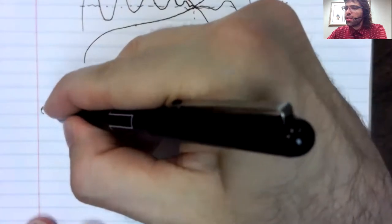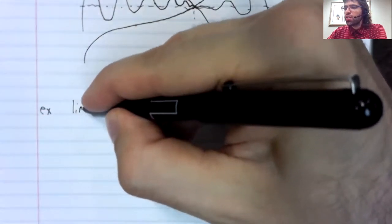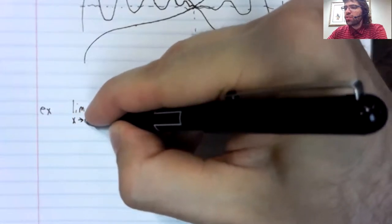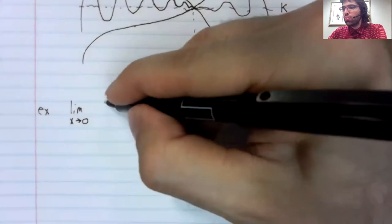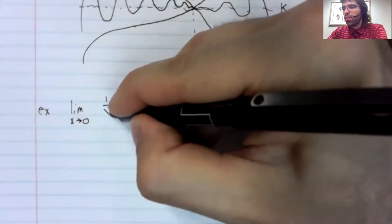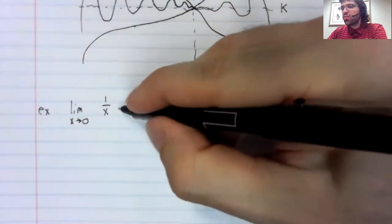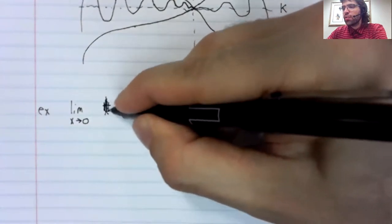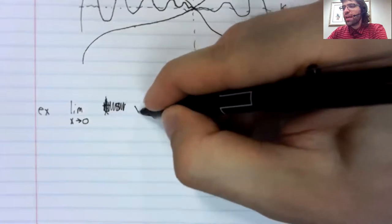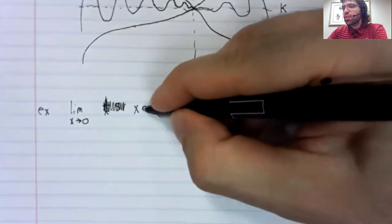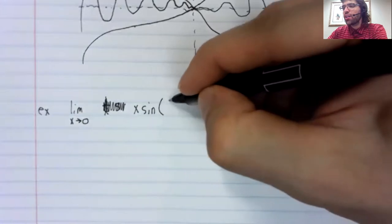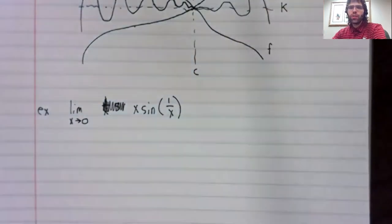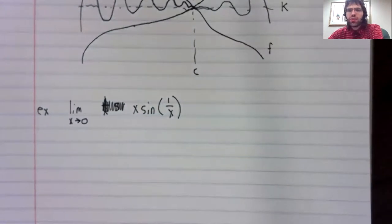As an example, let's look at the limit as X approaches 0 of X times the sine of 1 divided by X.